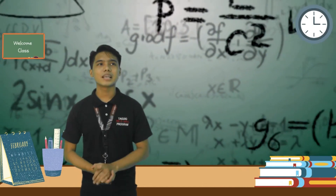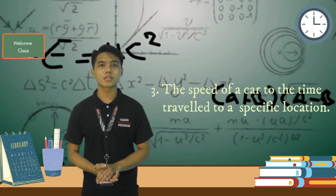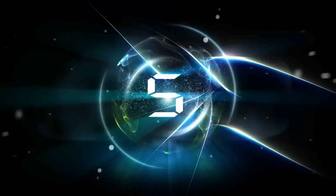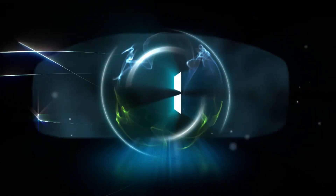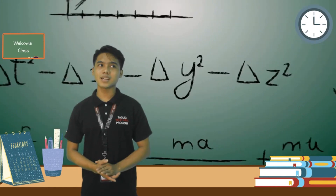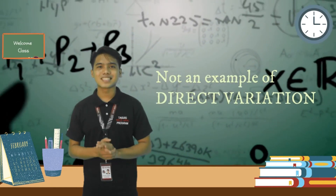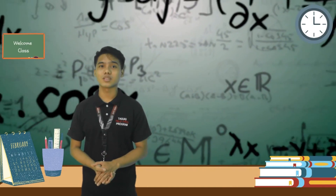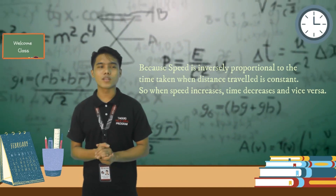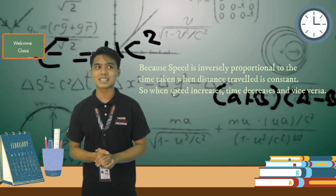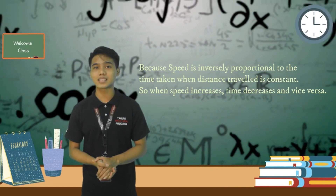And for number three: the speed of a car with the time traveled to a specific location. This is not an example of direct variation, because speed is inversely proportional to the time taken when distance traveled is constant. So when speed increases, time decreases, and vice versa.